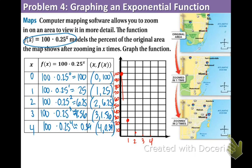So you can see that this graph is going down. That's called decay. It's going down like this. Put an arrow at the end. And as I mentioned before, as the zooming is going in, the amount of area being shown on the map is becoming smaller.